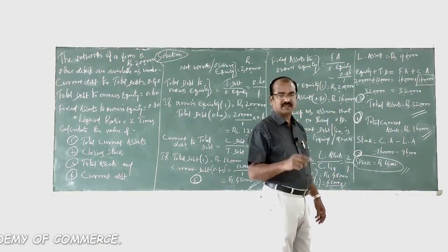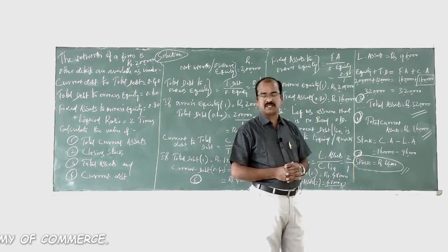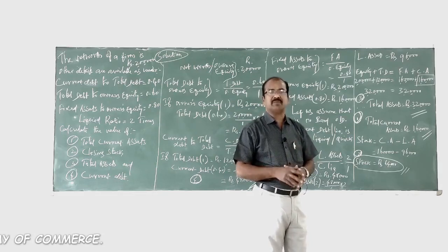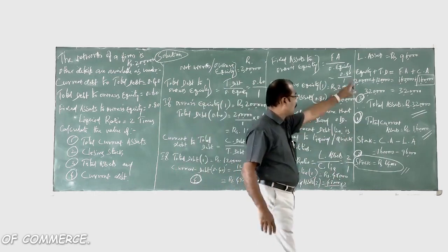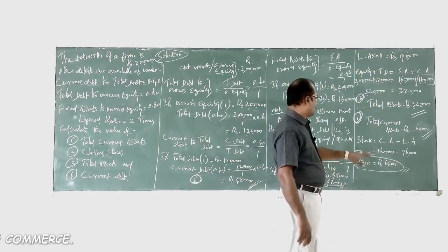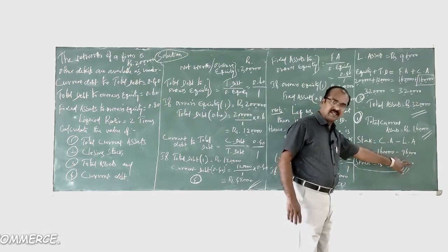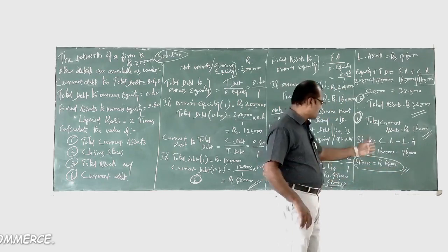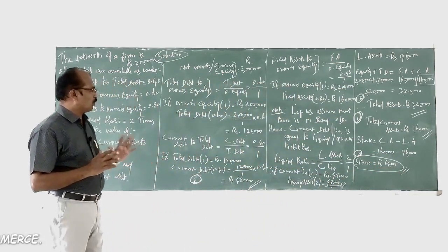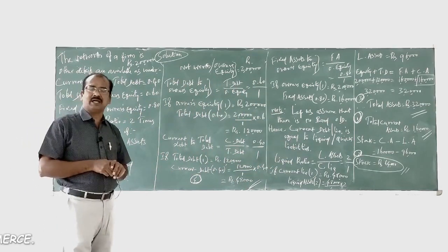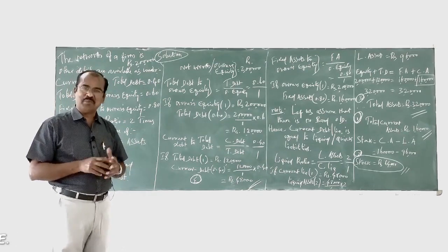For closing stock: in the absence of prepaid expenses, closing stock equals current assets minus liquid assets. Current assets = 1 lakh 60,000; liquid assets = 96,000. Therefore closing stock = 1 lakh 60,000 minus 96,000 = 64,000 rupees. I hope you clearly understood this interesting and important problem for ratio analysis learners. Thank you for watching — bye for now everyone.